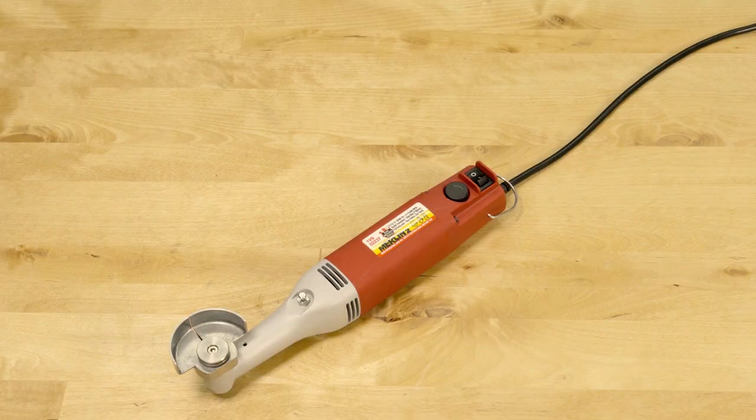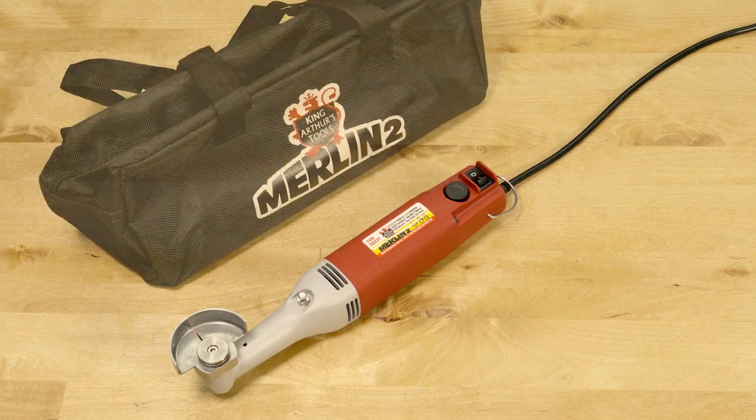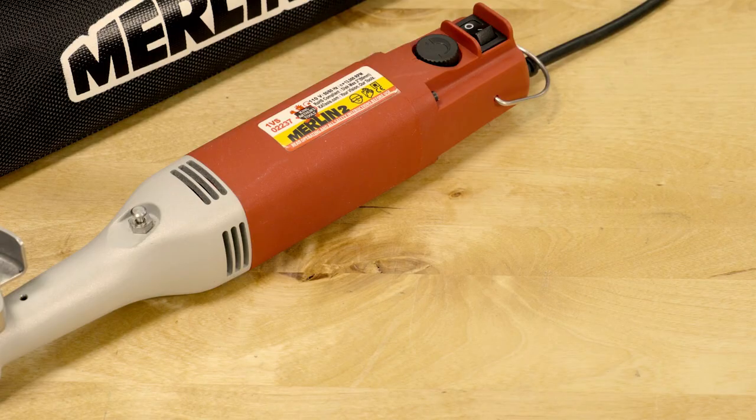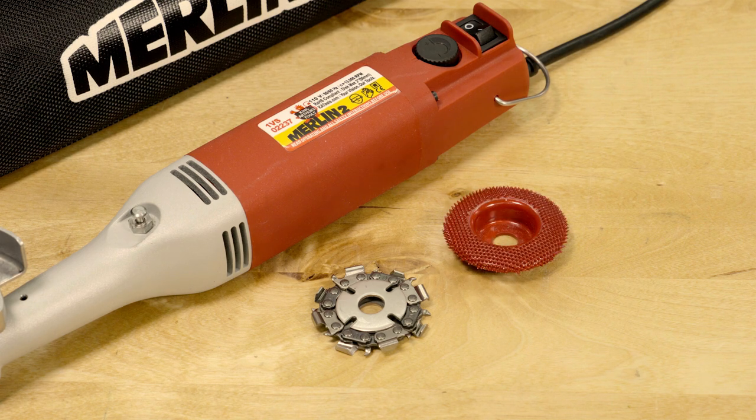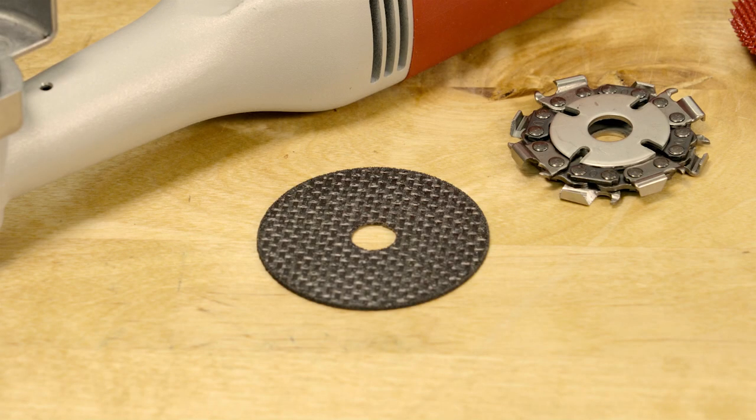The set includes the Merlin II grinder, storage bag, 2-inch chain cutting disc, coarse abrasive disc, and fiberglass cutoff wheel.